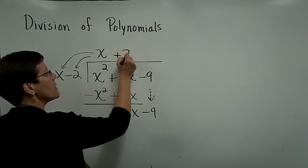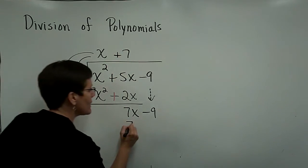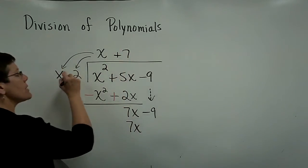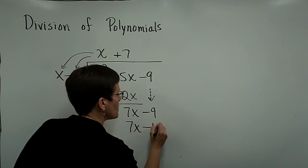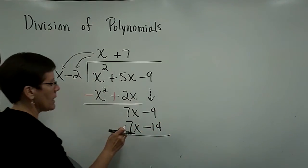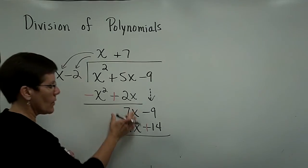I need a 7 up here so that when I multiply it by x, I get a 7x. And that's 7 times the minus 2 is a minus 14. And again, change my signs. Those are 0.